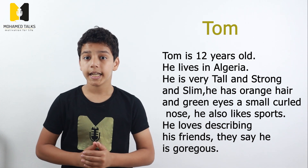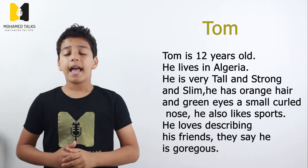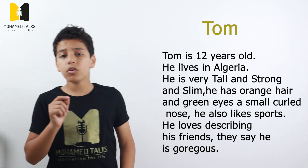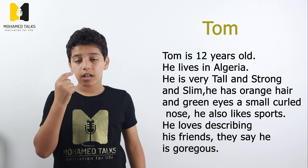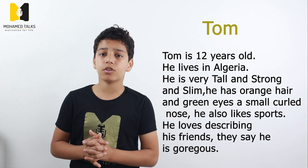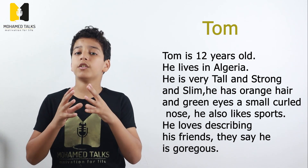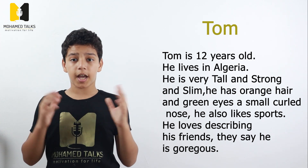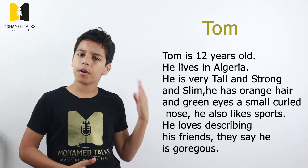Let's take another task. Let's describe a friend, a family member, or someone you know, and see how they look. I'm going to describe my friend Tom here. Tom is 12 years old. He lives in Algeria. Tom is very tall and strong. He's very slim too. He also has orange hair, green eyes, a small curved nose, and a big mouth. Tom likes to play sports and he enjoys describing his friends. He says his friends call him very generous. I say that Tom is a very gorgeous person.